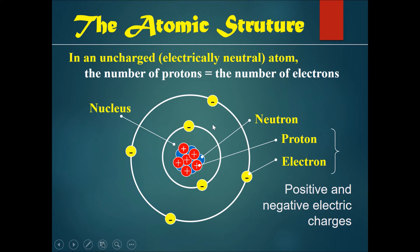The electrons should be orbiting the nucleus. The protons are positive charges, and the electrons are negative charges. In an uncharged or electrically neutral atom, the number of protons should equal the number of electrons.